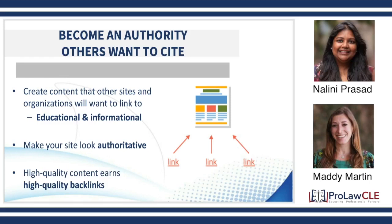Content is foundational — you need it for Google to even understand what your website's about. But say you and your competitor attorney have the same great content. How does Google decide who ranks number four versus seven? The tiebreaker is links. They have great content, but how many people are endorsing it? You can't just have terrible websites linking to you — they need to be relevant and authoritative. But when it comes down to it, if you have 14 different websites pointing at you and your competitor only has six, you'll have that competitive edge.